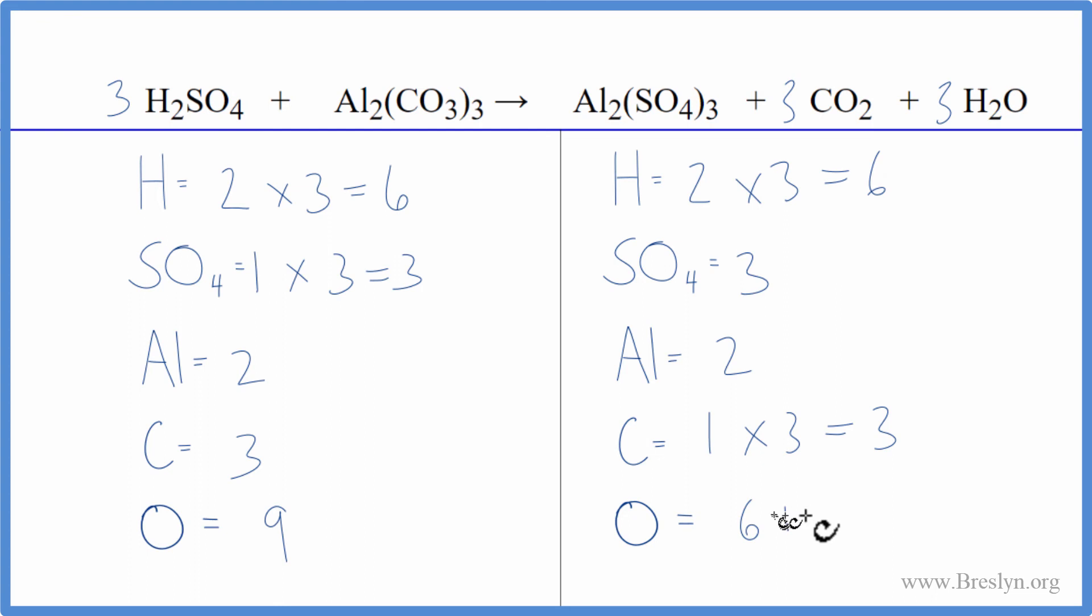Two times three is six, plus one times three. That gives us nine and we're done. This equation is balanced.